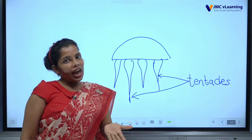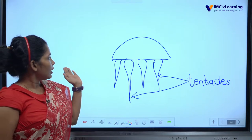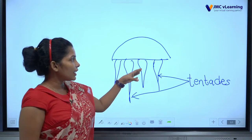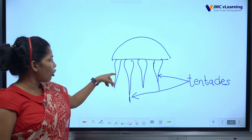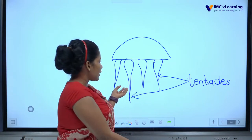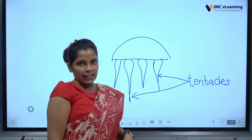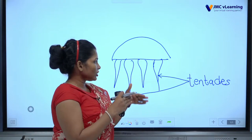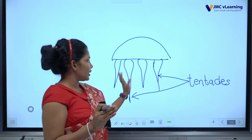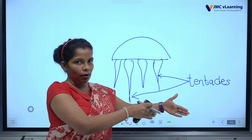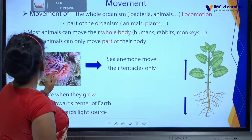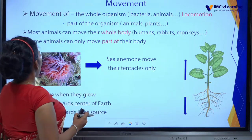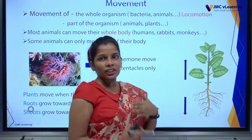Did you know which animal is scared of jellyfish? The famous animal is the shark. Sharks are scared of jellyfish because when they touch those tentacles, there is a current in the tentacles. So sharks normally do not swim in areas where jellyfish are present. Some animals can only move part of their body, and most animals can move their whole body, just like us.